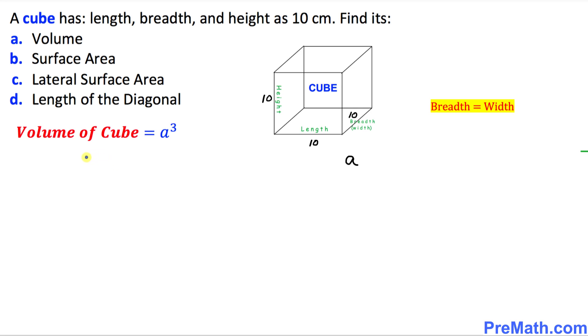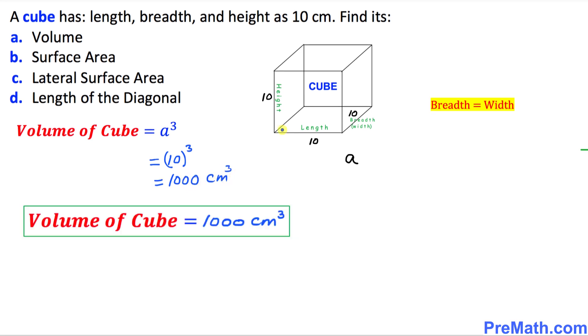Let's compute the volume of this given cube whose sides are 10 units. The formula is a³, and we know a is 10 units. So 10³ equals 1000 cubic centimeters. Thus, the volume of the cube is 1000 cubic centimeters, and that is our answer.